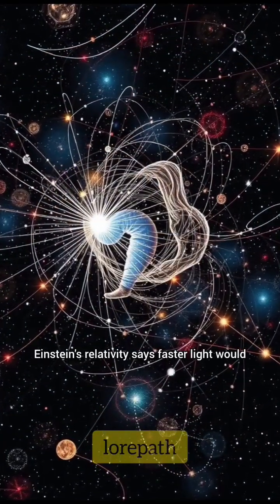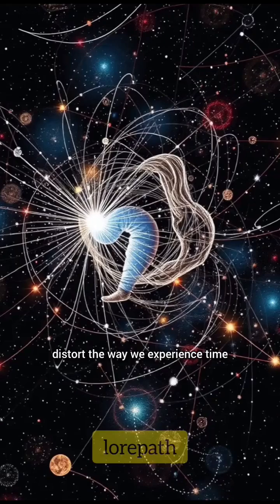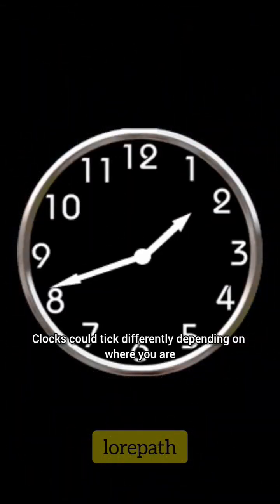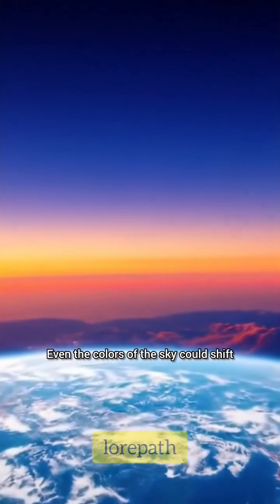Einstein's relativity says faster light would distort the way we experience time. Clocks could tick differently depending on where you are. Even the colors of the sky could shift.